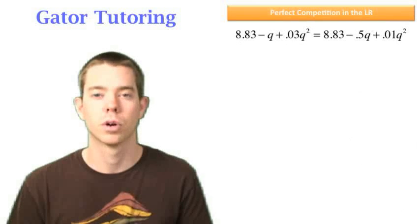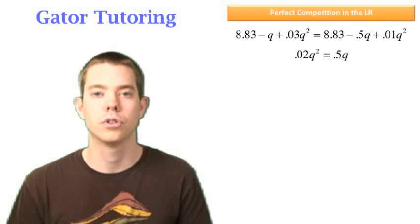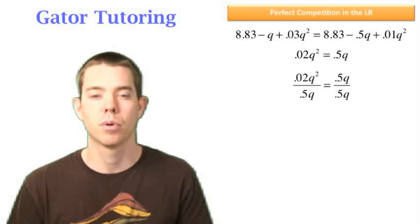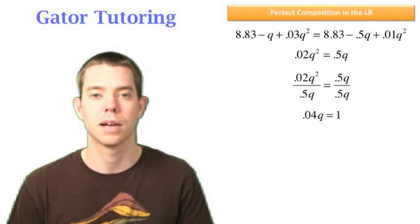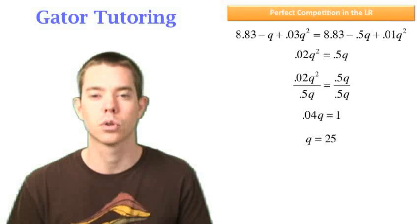From here, we're going to just do algebra to solve. We get 0.02q² = 0.5q. We can divide each side by 0.5q, so on the right side we're left with 1 = 0.04q, and we can solve for q = 25.